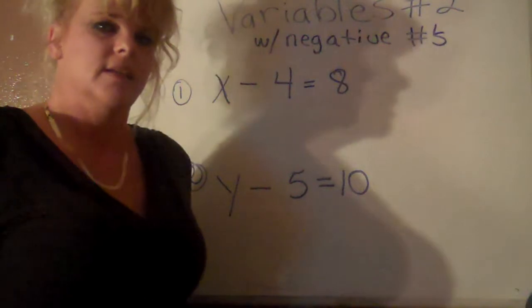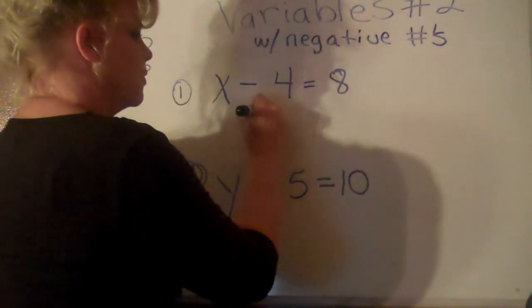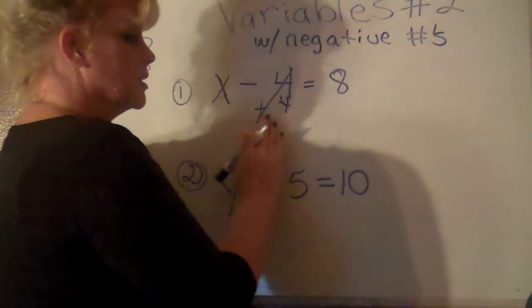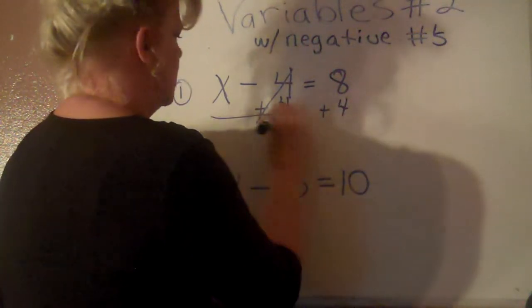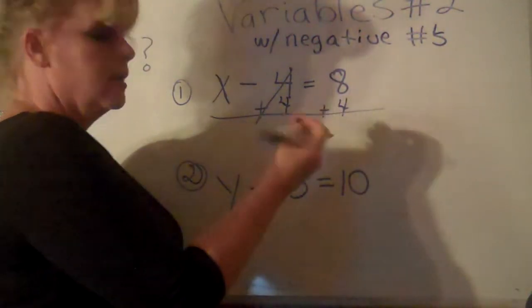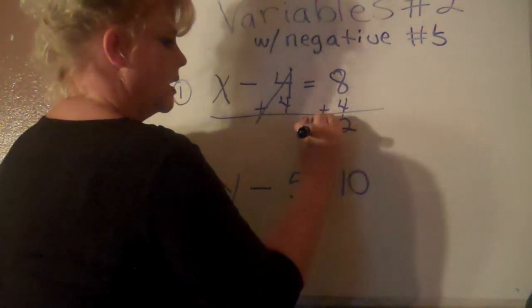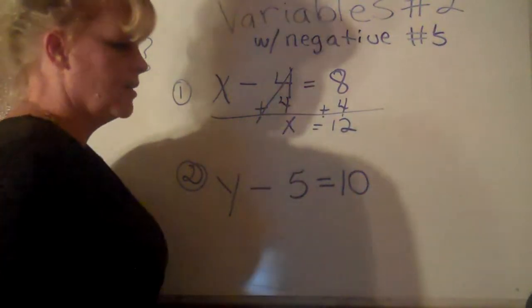So what's the opposite of negative 4? Well, positive 4, of course, and that's going to cancel. What you do to one side, you do to the other. All we have to do from here - they're both positive numbers - is add. Bring down the equal sign, that's cancelled, bring down the x, and there's your answer.